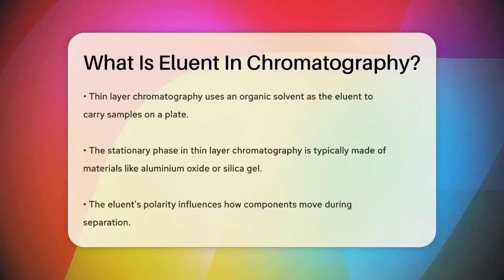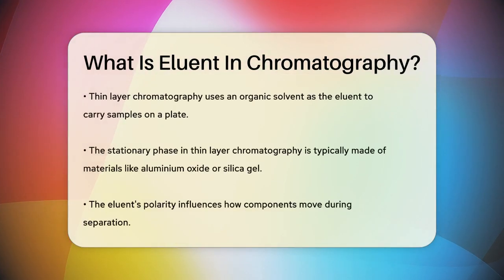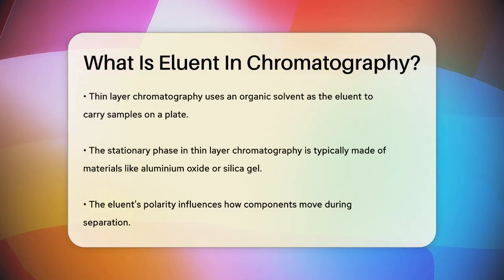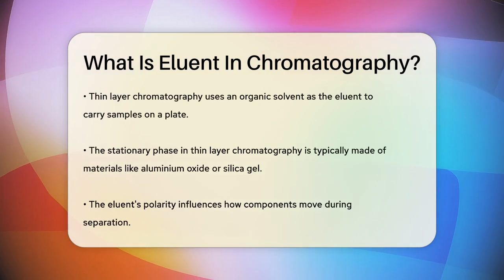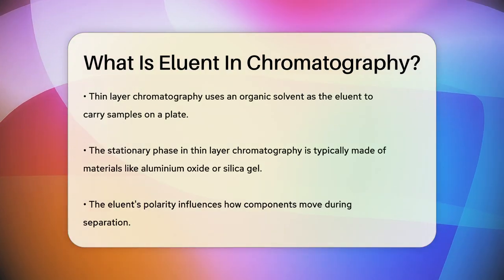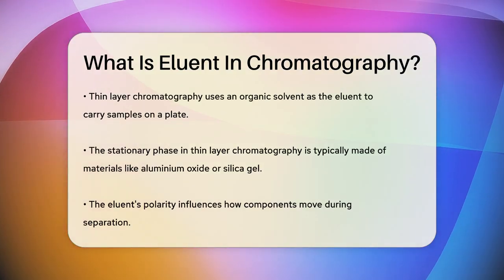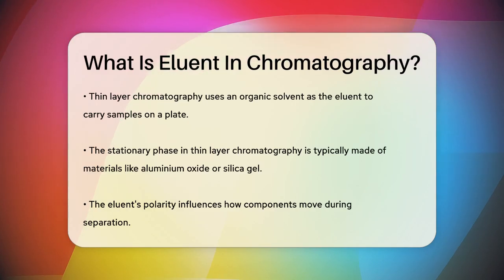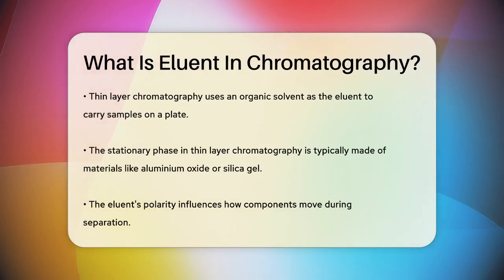Let's break it down further. In thin layer chromatography, the eluent is an organic solvent that carries the sample up a thin layer of material, like aluminum oxide or silica gel, on a plate. As the eluent moves up the plate, it separates the components of the sample based on how well they stick to the stationary phase — the material on the plate.